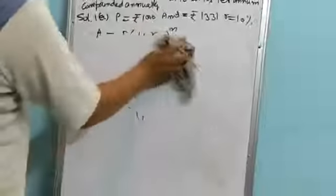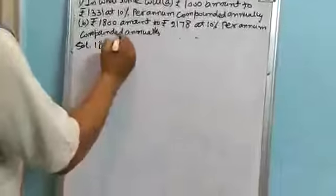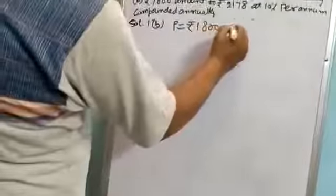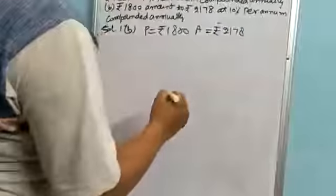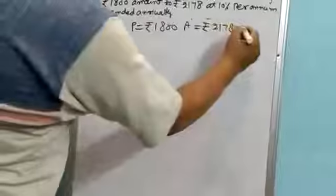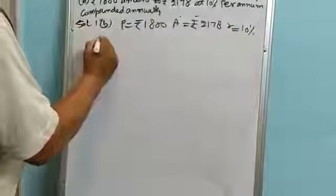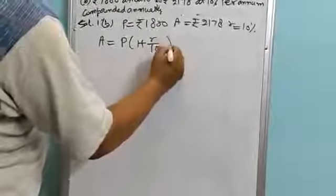Second part. Here, principle is Rs. 1800, amount is Rs. 2178, rate is 10%. Amount is equal to P times (1 plus R by 100) to the power N.